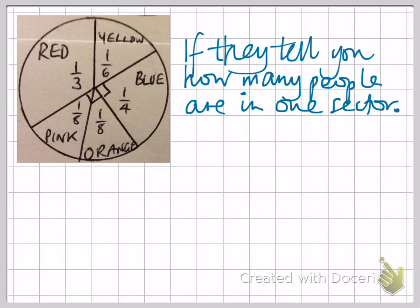To slightly complicate matters, sometimes they give you a pie chart with fractions in and they only tell you how many people are in one of the sectors. So, for example, let's imagine we're told that in this red sector we have got 24 children.